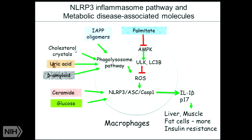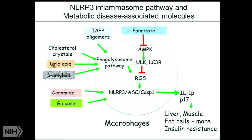Other people have found many other things: cholesterol crystals associated with atherosclerosis, uric acid associated with gout, beta-amyloid protein associated with Alzheimer's, ceramide, glucose, and so on, can activate the inflammasome pathways. Many of us have gone in vivo to show that when you don't have the inflammasome pathway, many of these diseases are much better, which is why many companies are now targeting this for metabolic diseases.